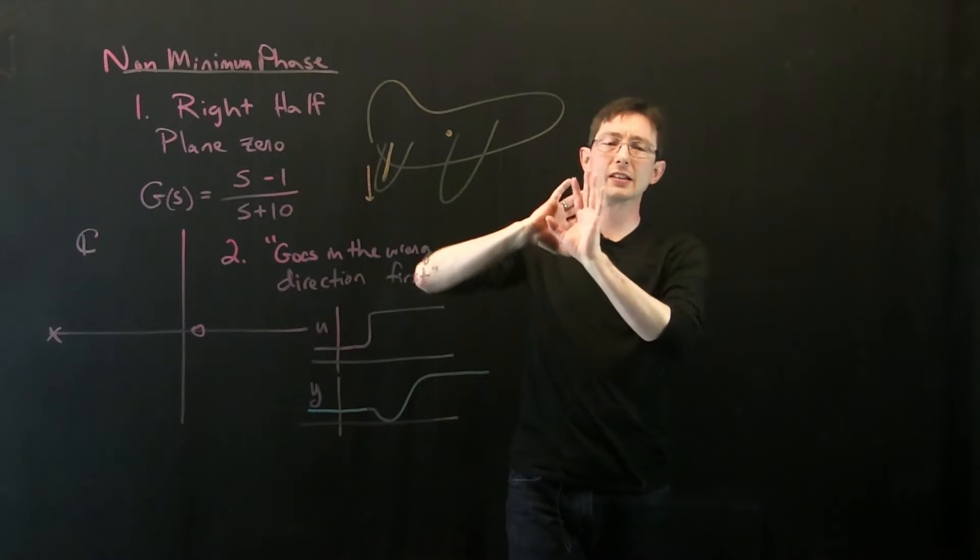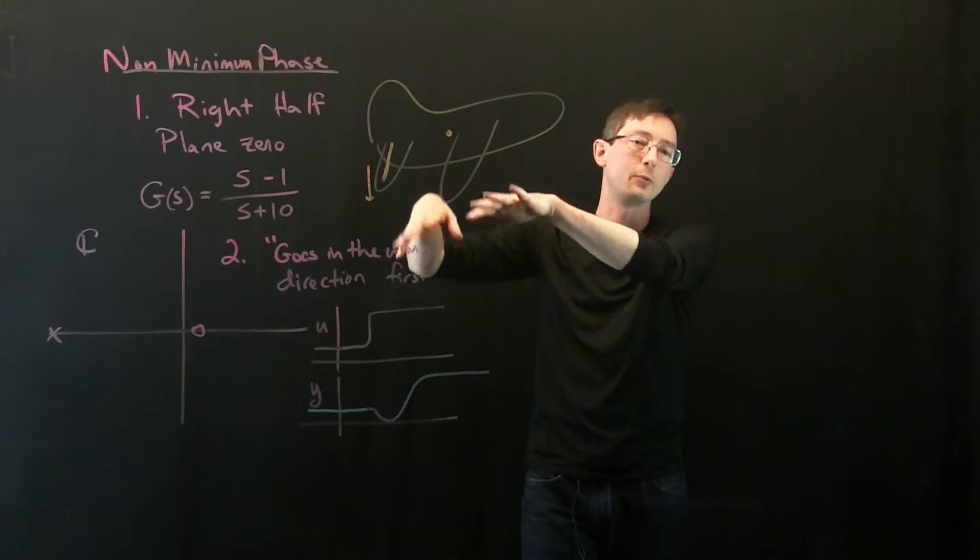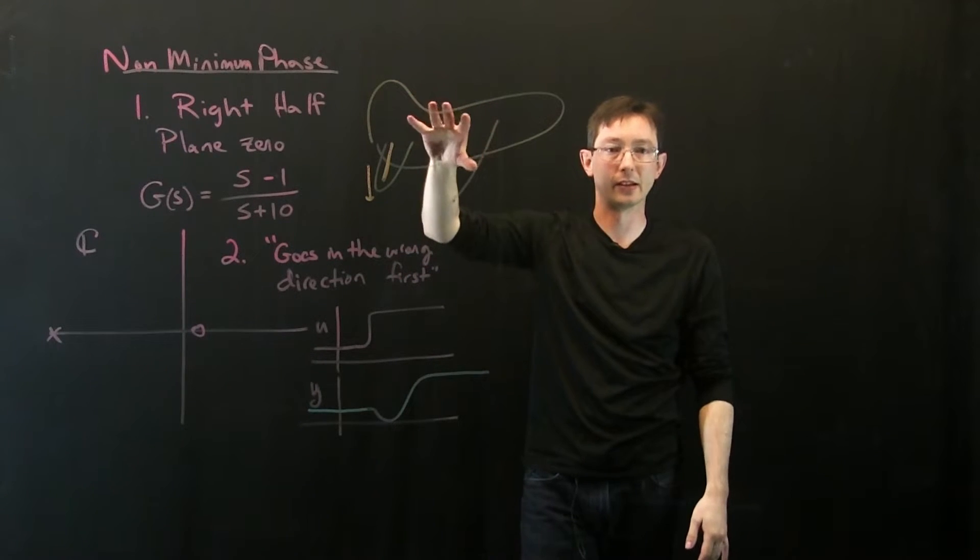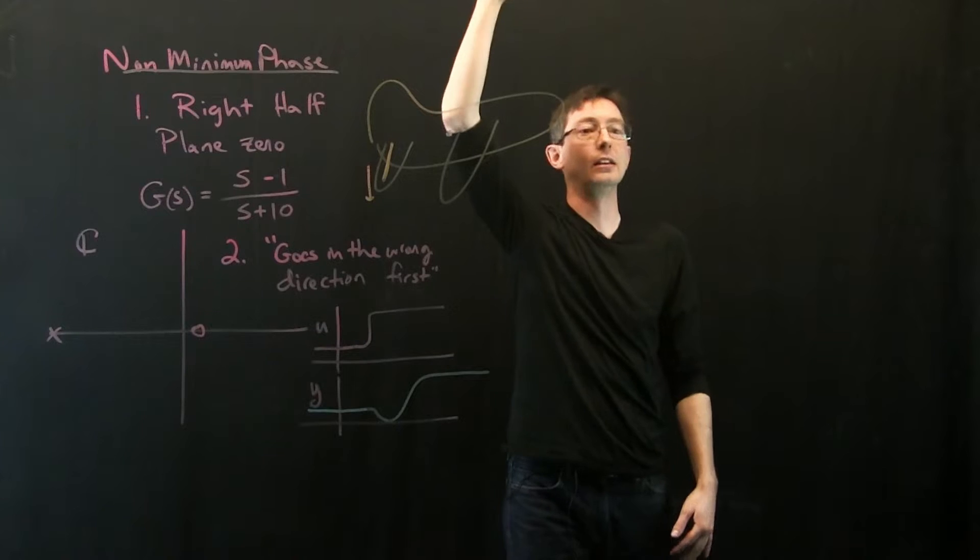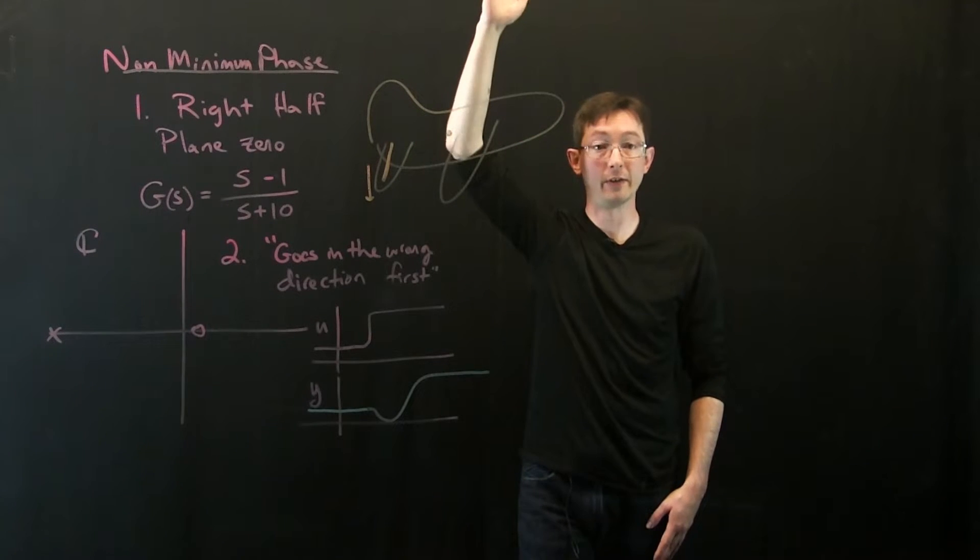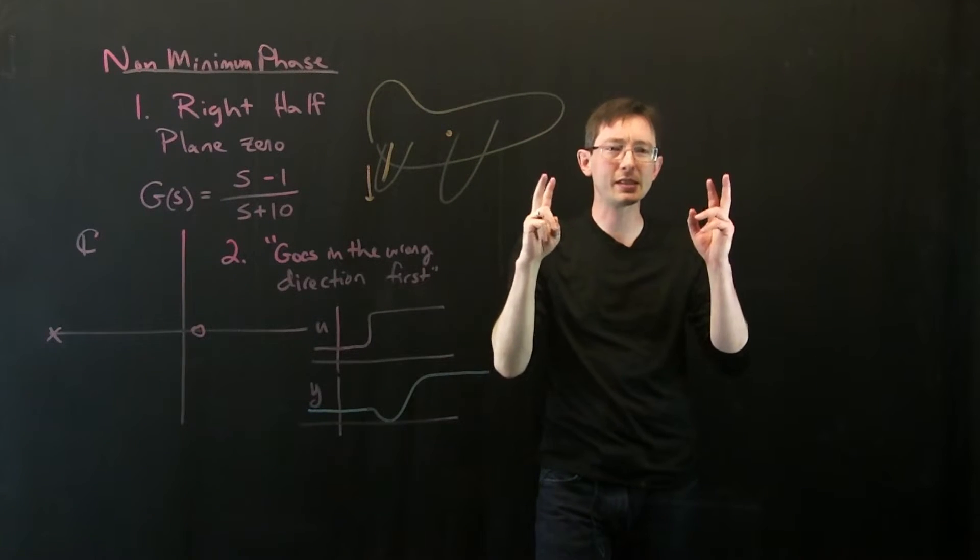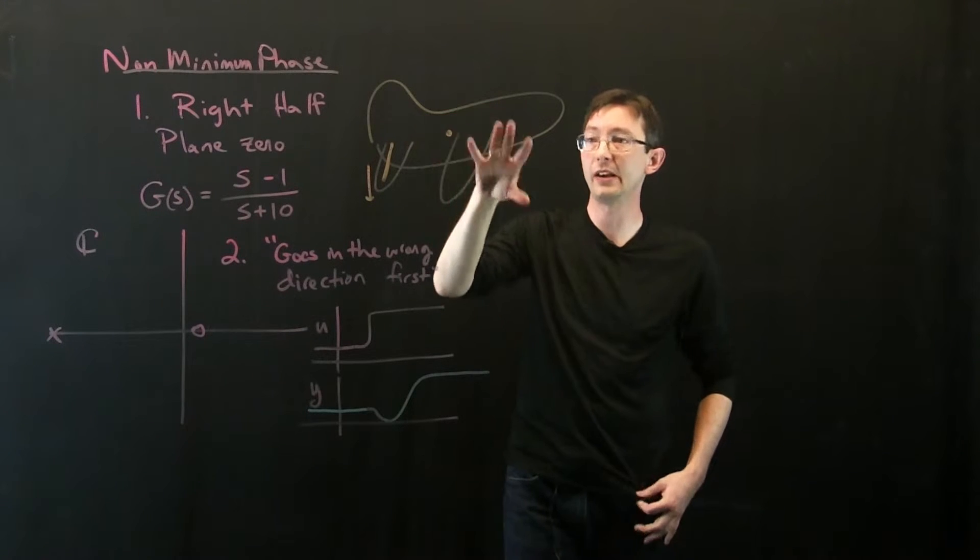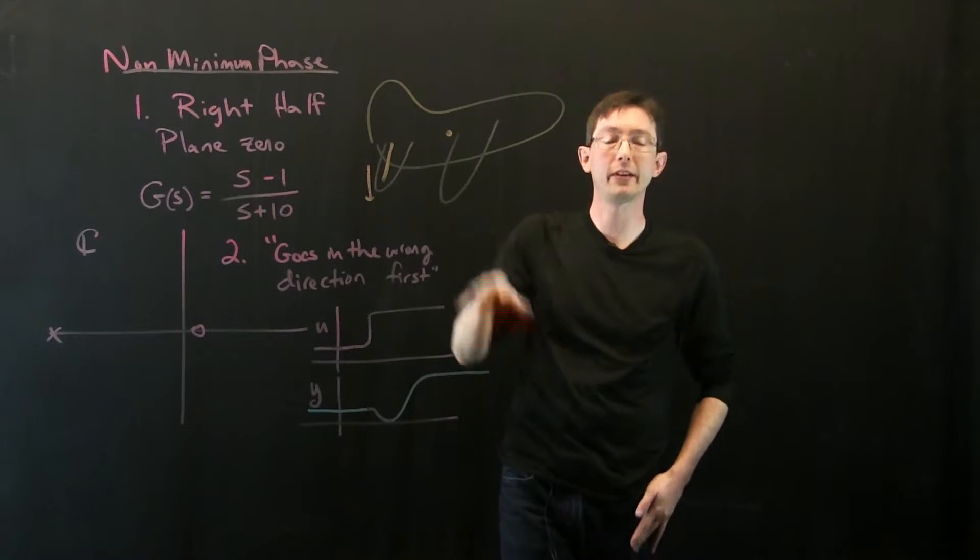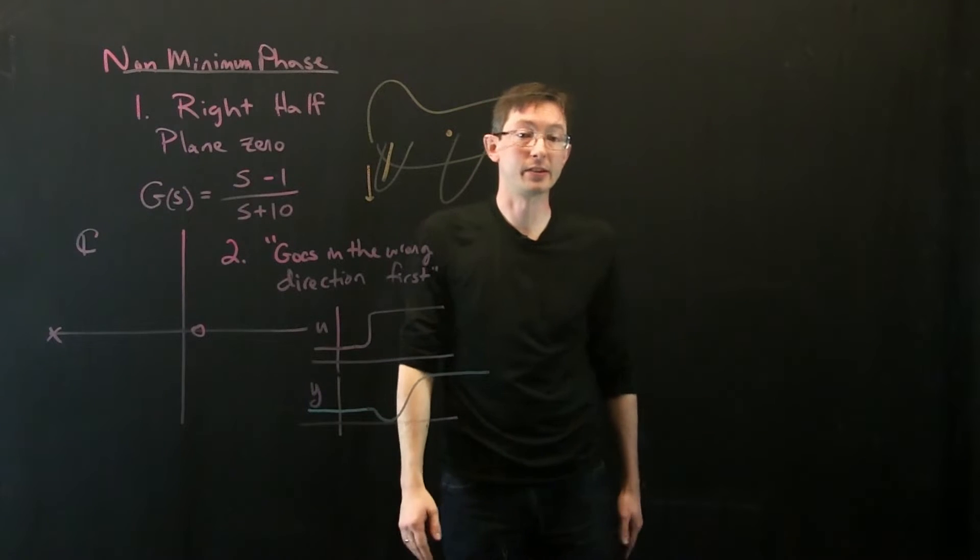And this is kind of the extreme case where you dip, you know, really, really minorly, maybe like a meter or something. It's a really minor dip. And then you might gain a ton of altitude very, very rapidly. So this system is kind of barely non-minimum phase for lots of lots of real aircraft. But it is an actual phenomenon that you can observe.